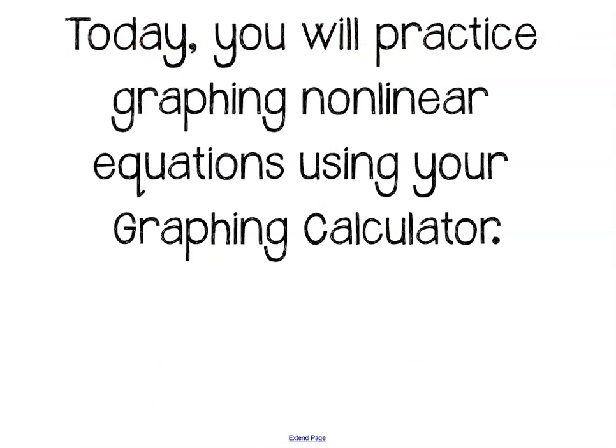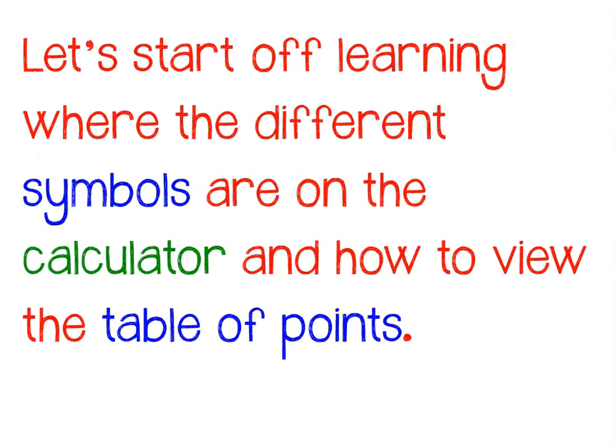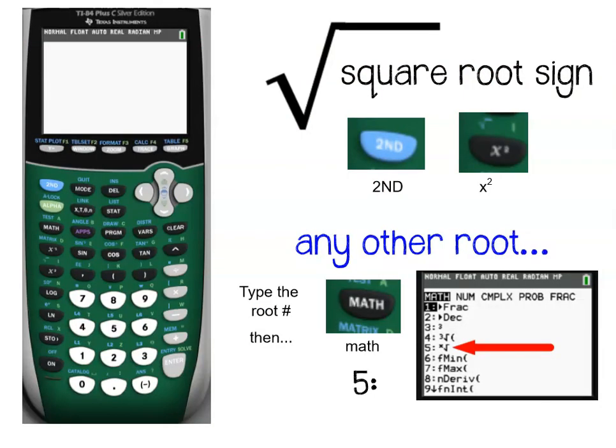Today you're actually going to practice graphing these nonlinear equations, and you're going to use your graphing calculator. Don't worry, you don't have a TI-84 yet, you can use the Desmos online graphing calculator. I'll show you how to use both in this video. So let's start off learning how to use the TI-84 calculator. You got to know where all those different symbols are. How do you get to the exponents? How do you get to the square root signs or the absolute values? How do you put in the letter X? How do you view the table of points? Here's a little cheat sheet for you. In order to use a square root sign, you have to press this second key, and then you have to press this X squared key.